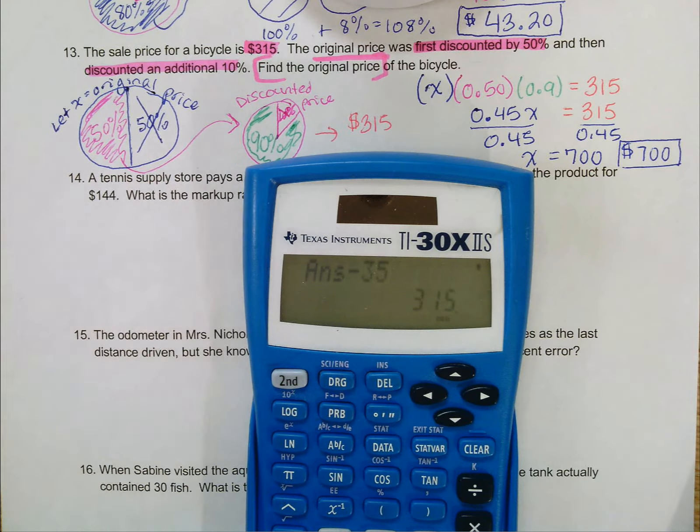Yep, that gives me 315. So it's a great strategy going back through and checking that your answer works. But we can tell here that the bike costs $700 originally.